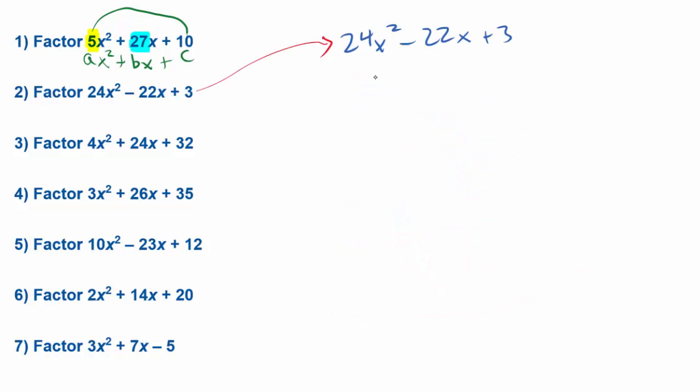So the next one I want to look at here is number 2. I'm going to look at one more example with grouping. And there will be a little bit of trickery here to get this one to work out. If we look through this here, we've got our 24x squared minus 22x plus 3. We're going to start this the same way by multiplying the a and the c term. And that should give me, in this case, 72.